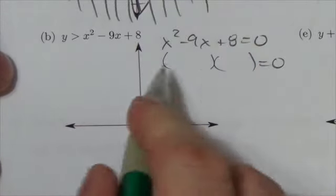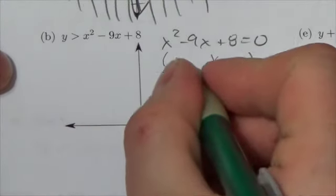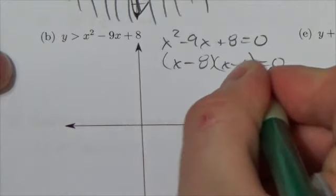So factors of 8 that sum to negative 9, so it's going to be negative 8x minus 1.